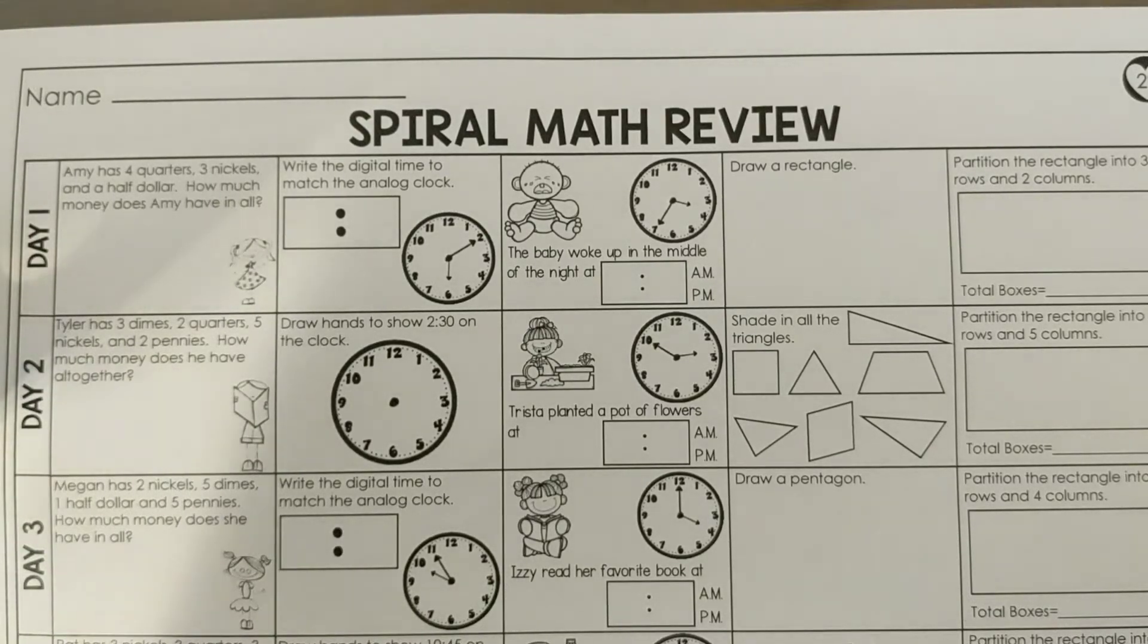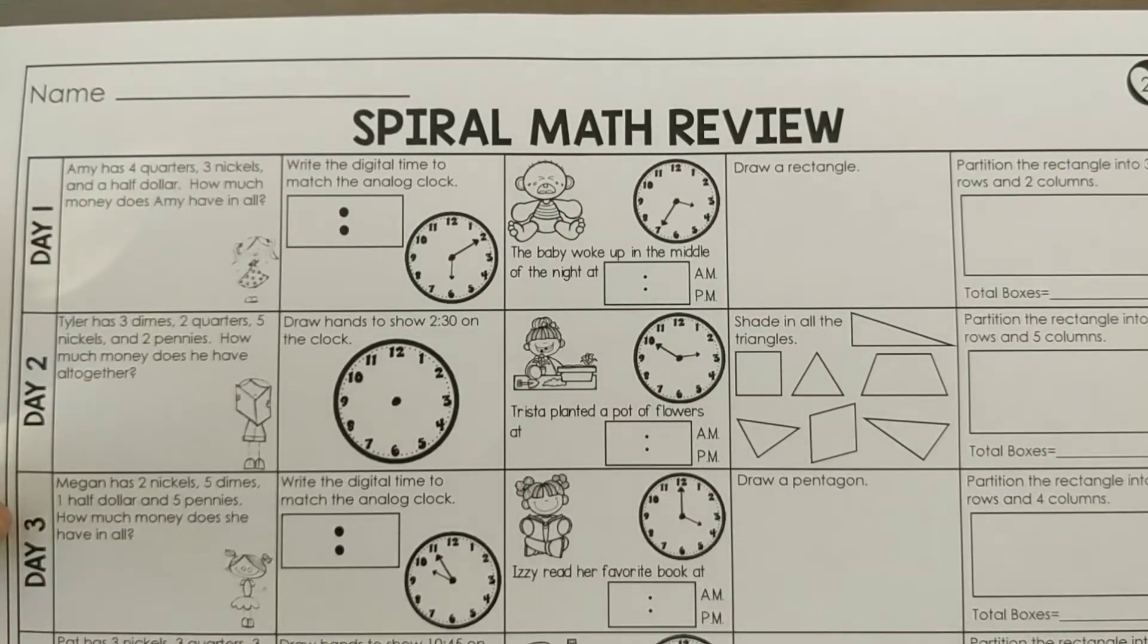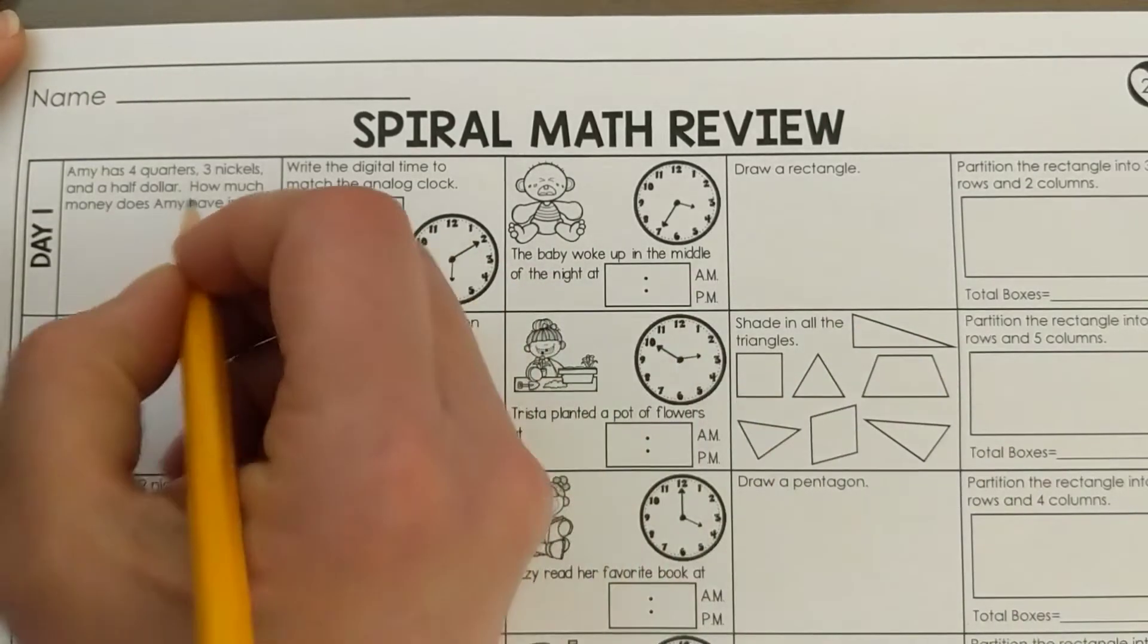It's time to correct our spiral math review. We're going to do Day 1, this is for Monday, March 23rd. Let's begin. Amy has four quarters, three nickels, and a half dollar. How much money does Amy have in all?